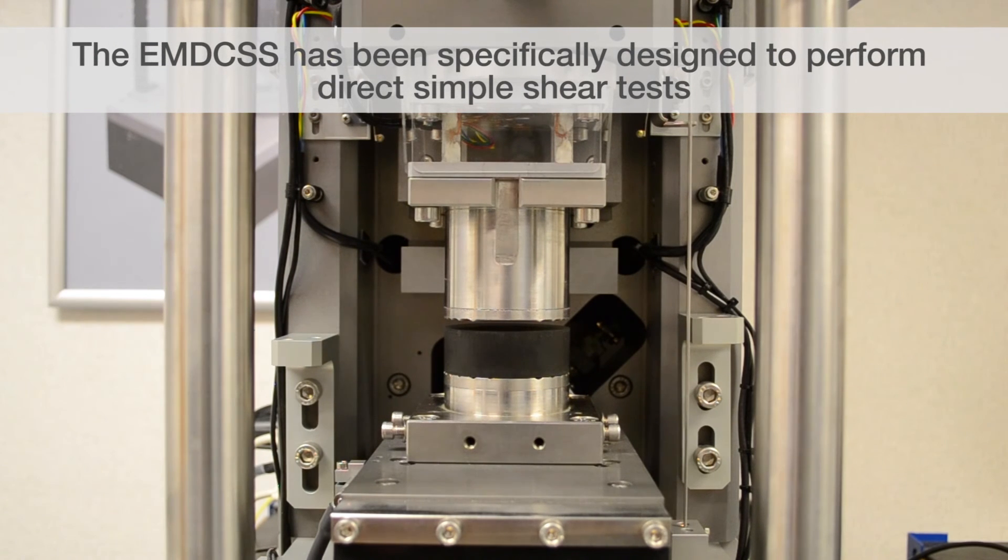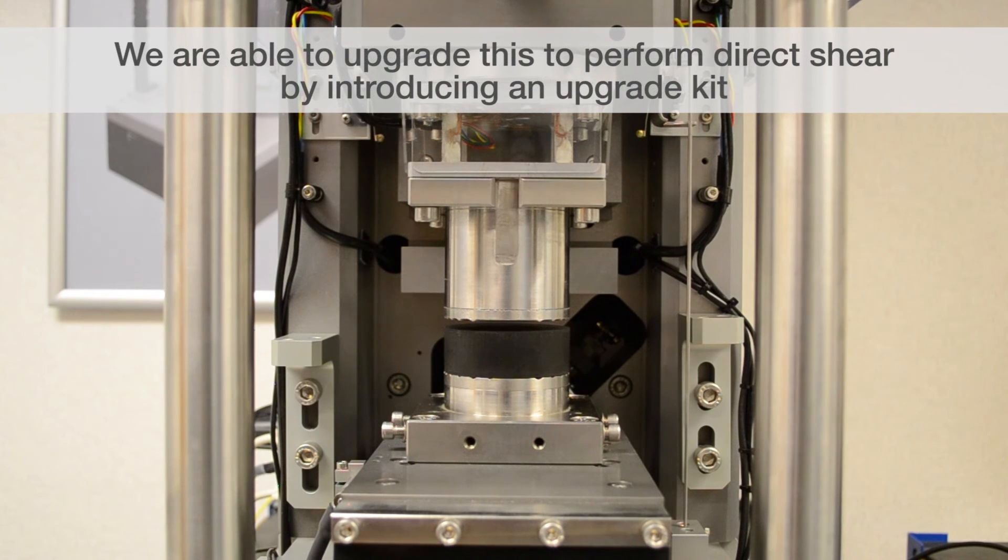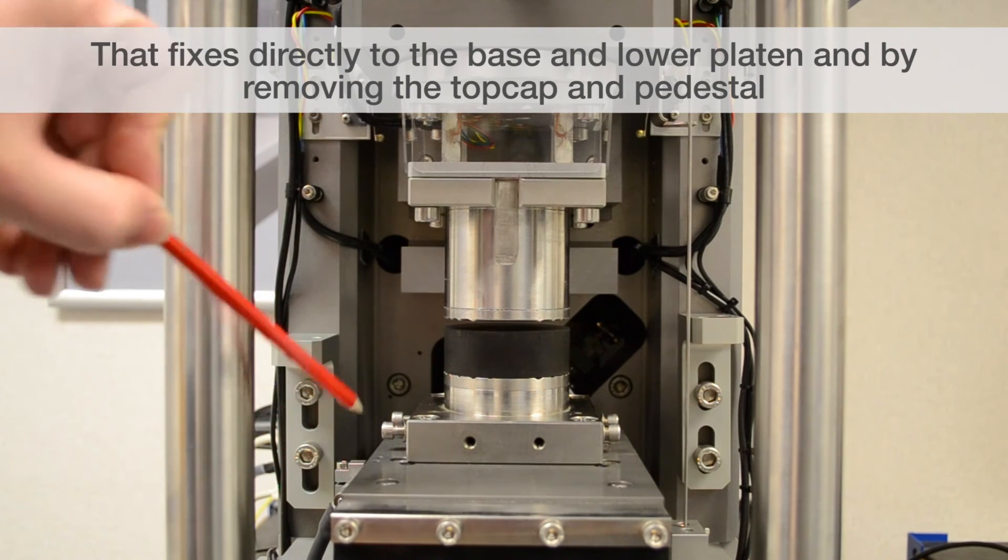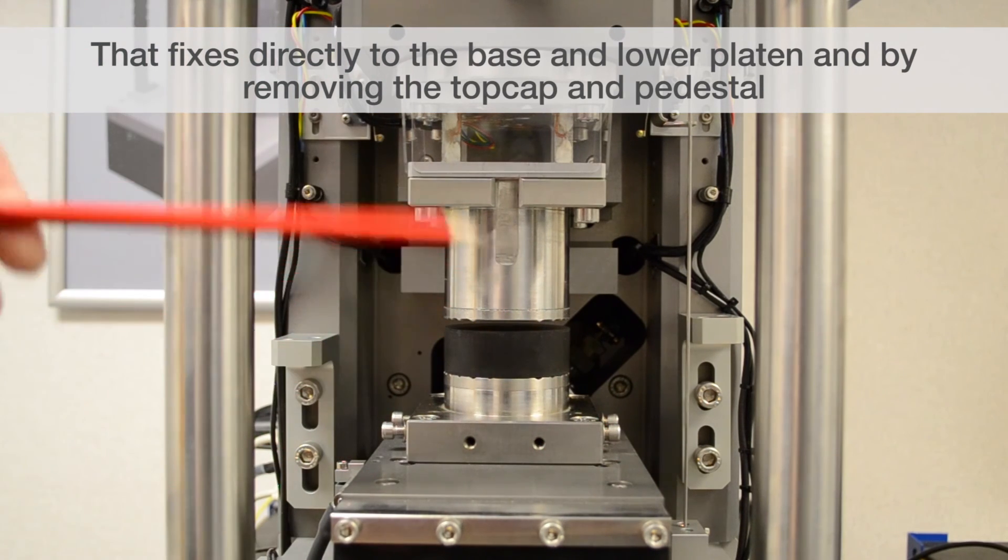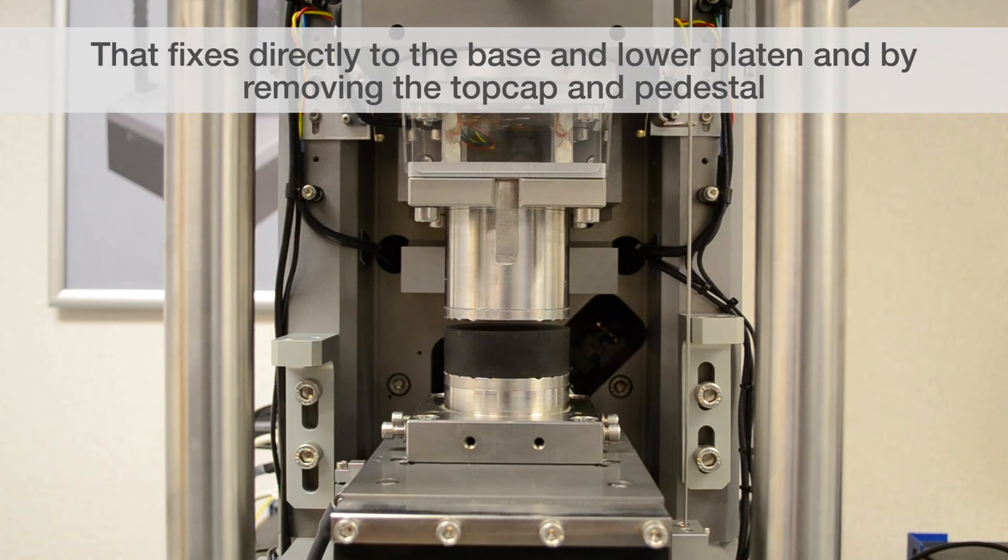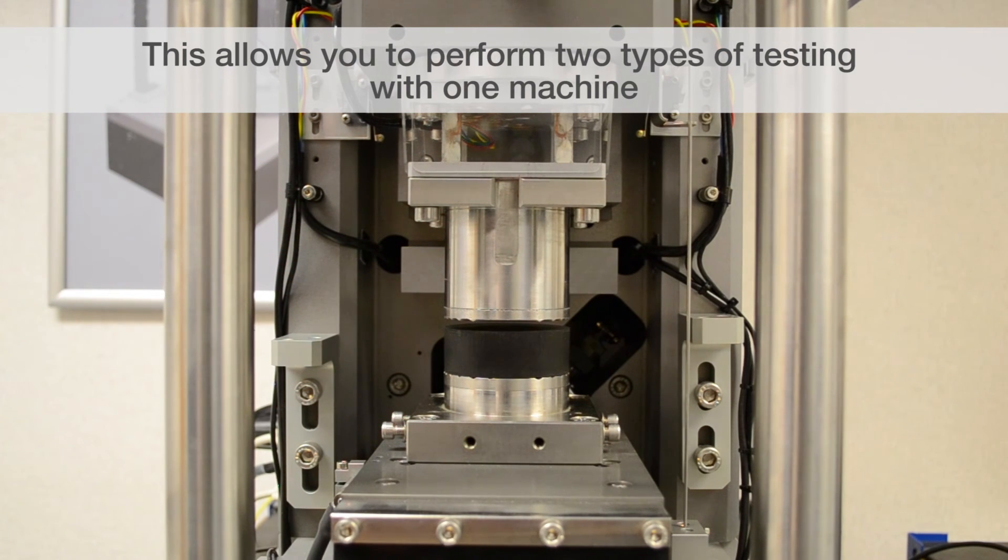The EMDCSS has been specifically designed to perform direct simple shear tests. However, we are able to upgrade this to perform direct shear by introducing an upgrade kit that fixes directly to the base and the lower platter of the machine and removing the top cap and the pedestal designed for simple shear testing, and this can then allow you to perform two types of tests with one machine.